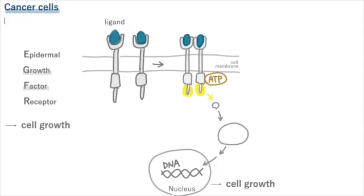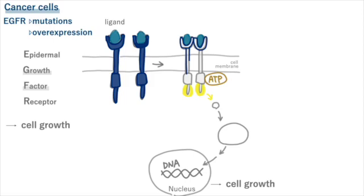In a large number of cancer cells, EGFR is mutated or overexpressed. EGFR inhibitors are drugs that inhibit cancer proliferation through this EGFR pathway.